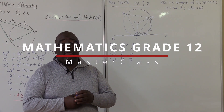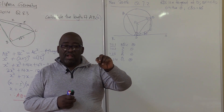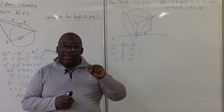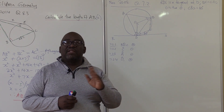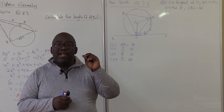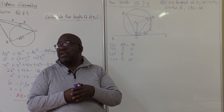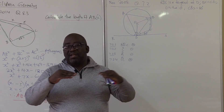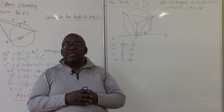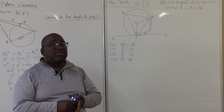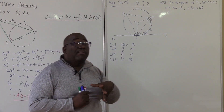Remember the ten theorems. The first two: a line drawn from the center of a circle perpendicular to a chord bisects the chord. The angle at the center is twice the angle at the circumference. Subtended by the diameter, 90 degrees. Two tangents from the same point. All those theorems — you look for them in this diagram.